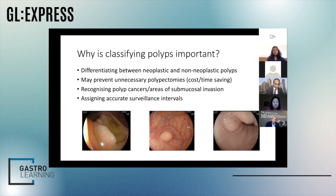It's also important to classify polyps because we need to be able to recognize cancers and areas of cancer within larger lesions, which makes a difference to which resection method we use or whether lesions are even endoscopically resectable at all. It would also be really nice if we could assign accurate surveillance intervals using optical diagnosis — that could be another KPI as well.